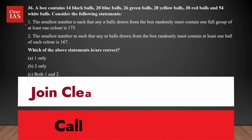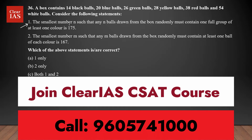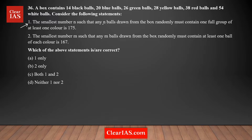Let's start with statement one. Statement one says that the smallest number n such that any n balls drawn from the box randomly must contain one full group of at least one color, and the minimum value of n is 175. We need to check whether the minimum number of balls you should select to ensure this condition is 175 or not.